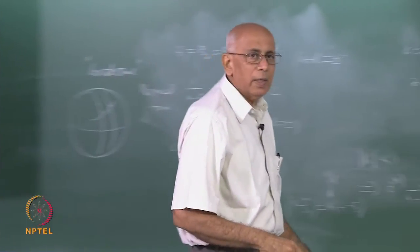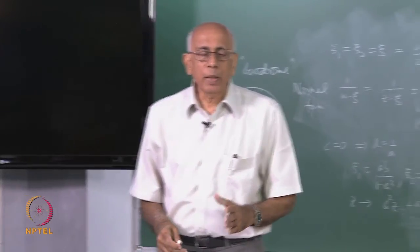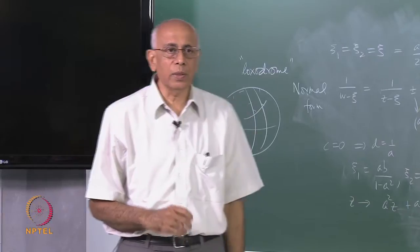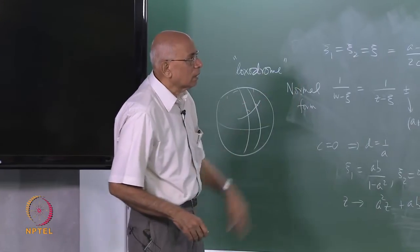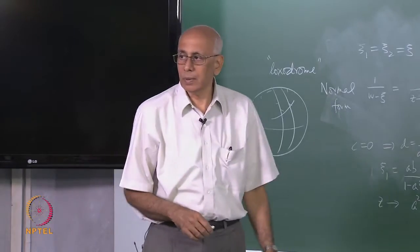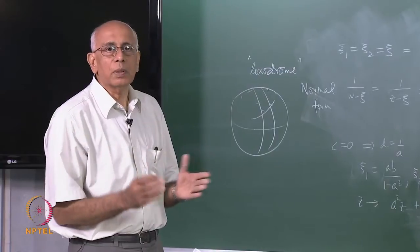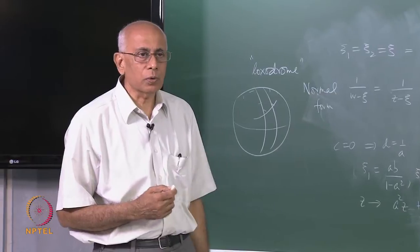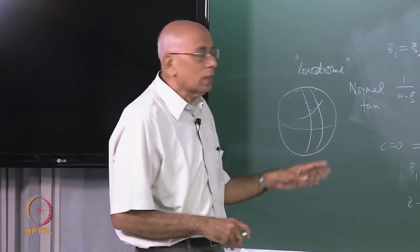The term loxodrome comes from navigation: sailors would maintain a fixed angle with the north star to determine their course, and the curve traced on the sphere is a loxodrome. These iterates lie on a loxodrome, so the transformation is called a loxodromic transformation. When mod k equals one the transformation is called elliptic. The crucial input for all this is the invariance of the cross-ratio, which gives us the normal form, from which all these consequences follow.